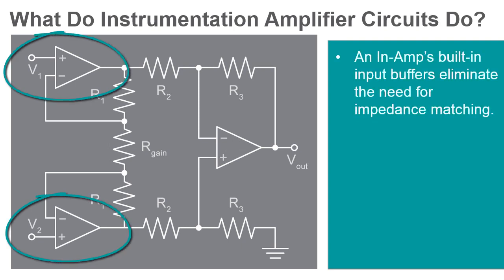The two input buffers of the instrumentation amplifier eliminate the need for external impedance matching. This allows an in-amp to be used to amplify both high and low impedance sources, increasing its flexibility.